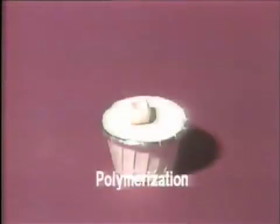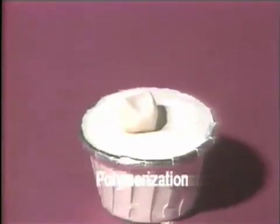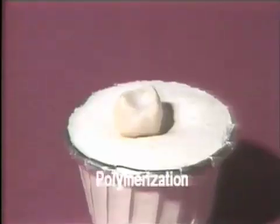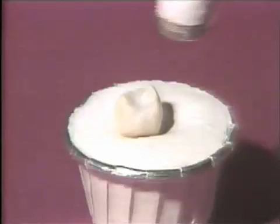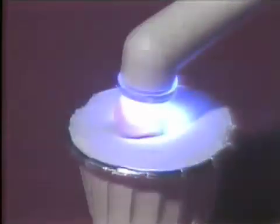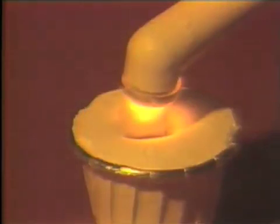There are two methods of sealant polymerization: chemical or autopolymerization, and light polymerization. Visible light polymerization is probably the most common method used to cure sealants. Because of the intensity of these lights, protective eyewear, or a protective shield as demonstrated here, should be used during polymerization.